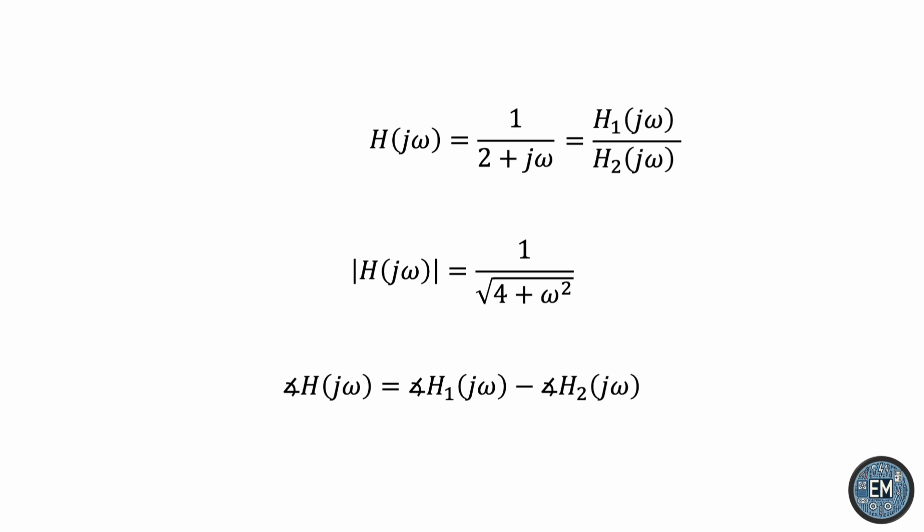Similarly, for the phase, we'll have the phase of the numerator. The phase of 1 is simply 0. And then the phase of the denominator is tan inverse omega over 2. Subtracting, we get negative tan inverse of omega over 2.